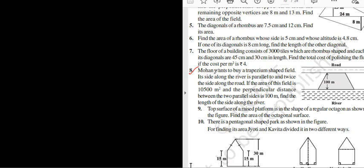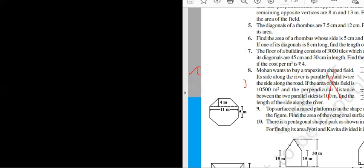In question number eight, Mohan wants to buy a trapezium shaped field. Its side along the river is parallel to and twice the side of the road. If they don't give you the figure, I think you can make the figure of your own. Let's read the question carefully. I am just hiding the figure for practice because in exam they will not give you the figure.